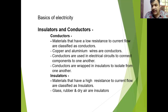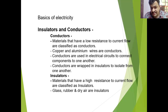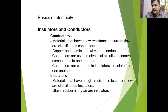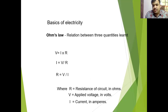Now coming to examples of insulators. You know that glass — glass is a perfect example of an insulator. Current will not pass through glass; glass will resist the current flow. Another example is rubber, and one more example is dry air. Through these materials, current will not pass or only a very small negligible amount of current will pass.